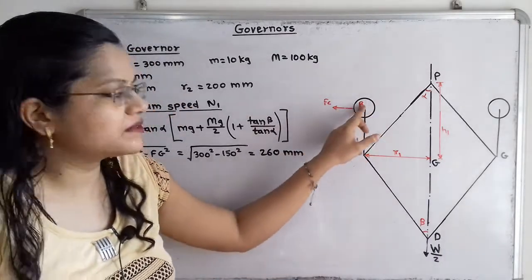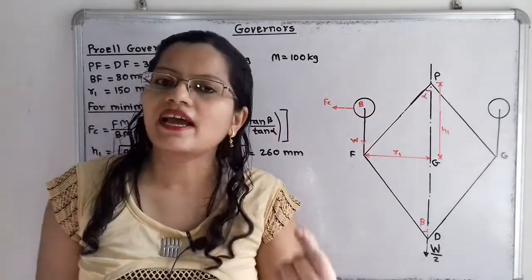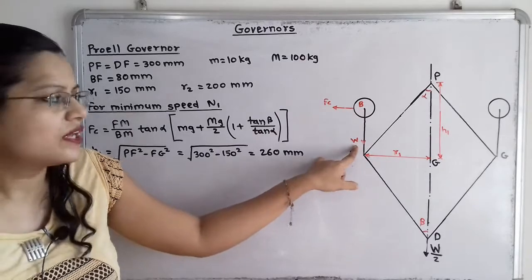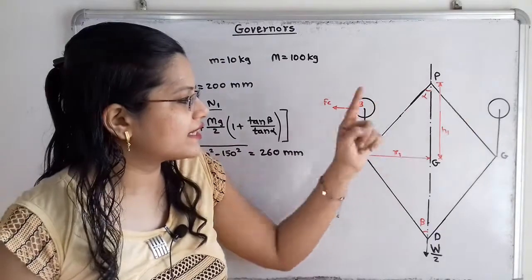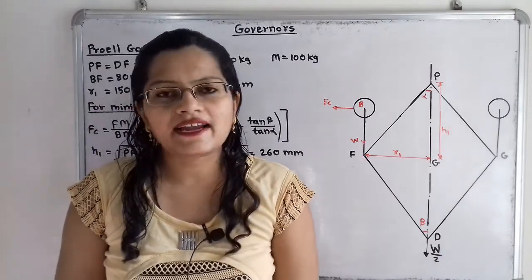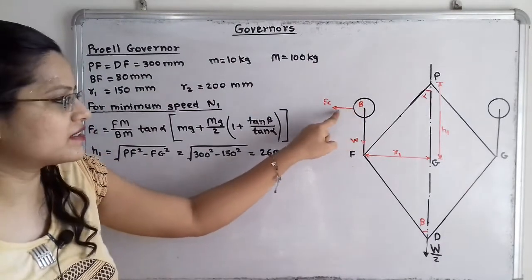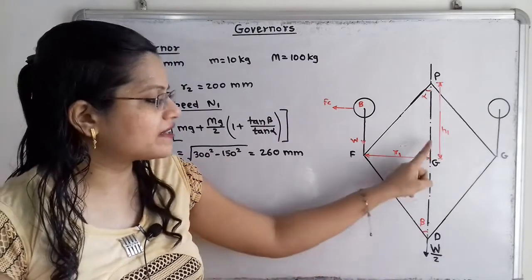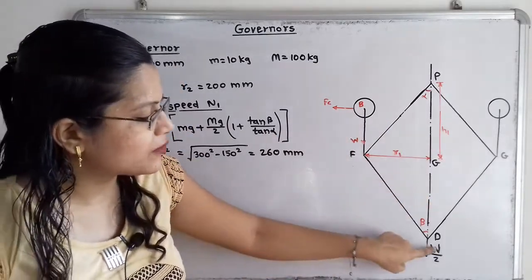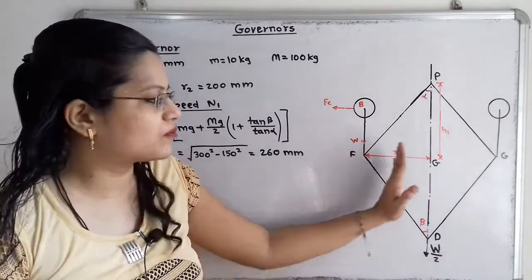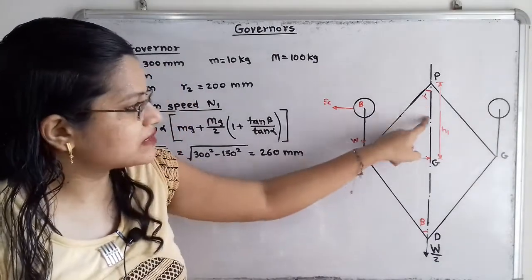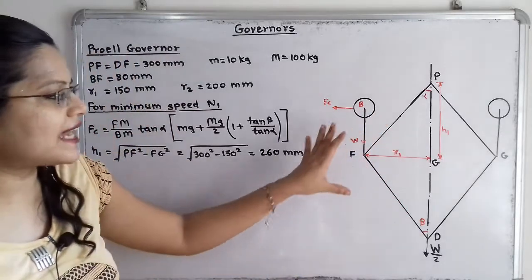Due to the mass m of the fly ball, its weight acts vertically downward through the centre of the fly ball. The centrifugal force acts radially outward through the centre of the fly ball. There is also the central weight W. Since we consider only half of the governor, we take W/2 acting downward through the spindle axis.